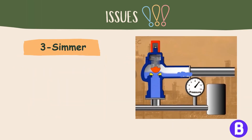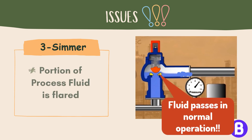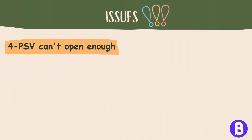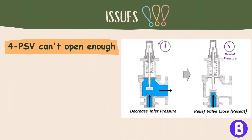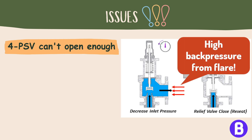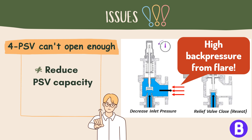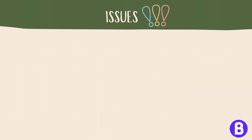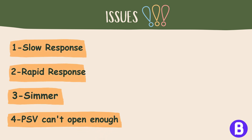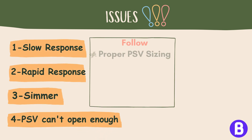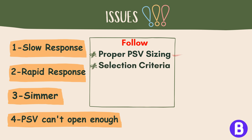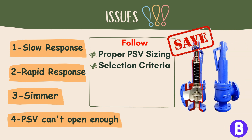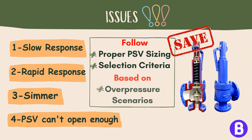Premature opening, or simmer, means that a portion of the process fluid is relieved to flare, which is an undesirable condition. Additionally, a pressure safety valve that cannot open enough due to excessive backpressure — which opposes the lifting force — can alter the valve's response to overpressure and potentially reduce its flow capacity. Each of these issues can compromise the safety and efficiency of a process system, which is why it is essential to follow established sizing and selection criteria such as those outlined in API standards to ensure reliable protection against overpressure scenarios.